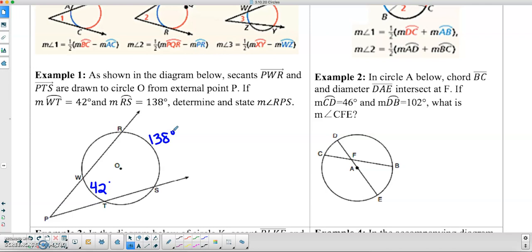So because it's an external angle here, we are going to take the big arc, subtract the small arc, and then divide it by 2 in order to get our exterior angle.